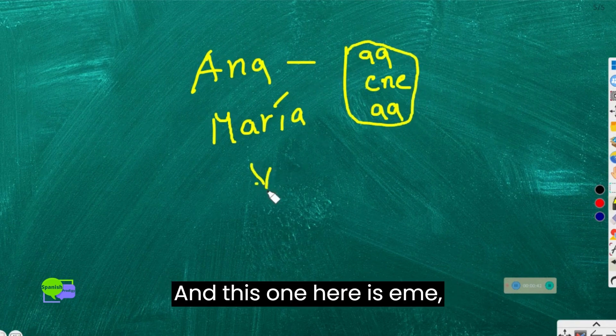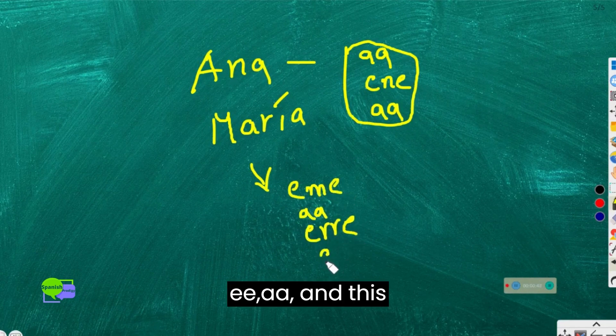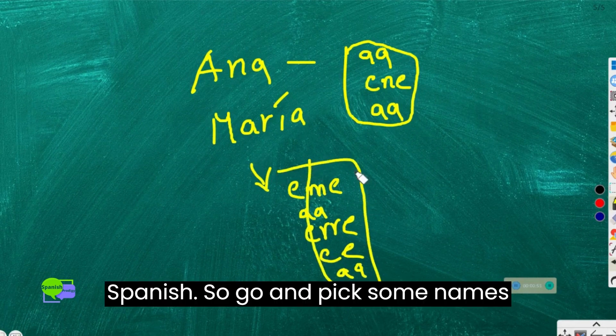And this one here is M, A, R, I, A. And this makes the spelling of María in Spanish.